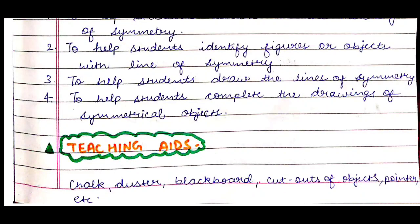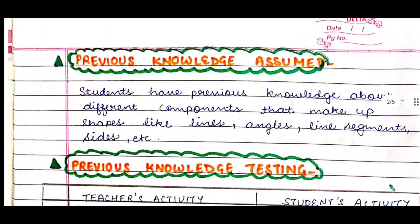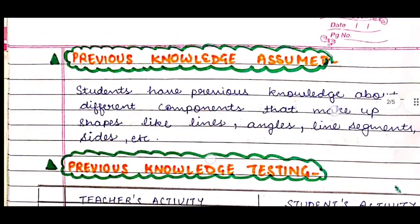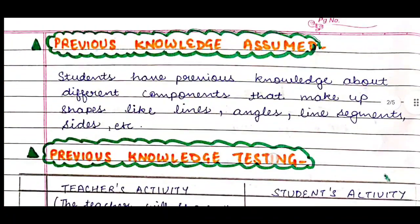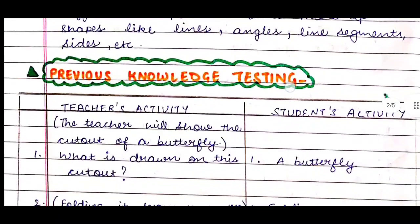Teaching aids means all the materials you need to teach that particular chapter. We'll be needing chalk, duster or blackboard, cutouts of objects, pointer, etc. — whatever you need, write it in teaching aids. After that comes previous knowledge assumed. We'll write: students have previous knowledge about different components that make up shapes like lines, angles, line segments, sides, etc.